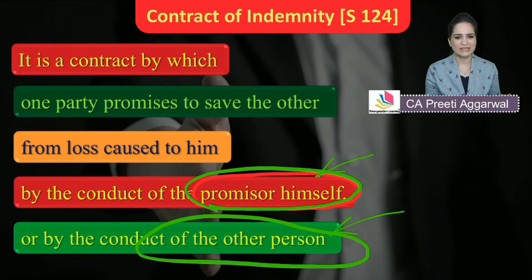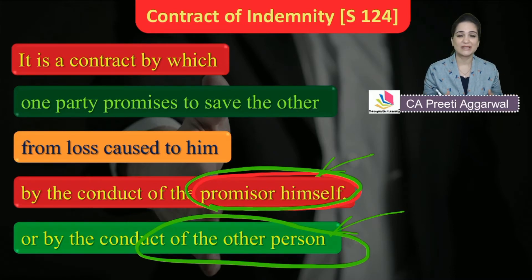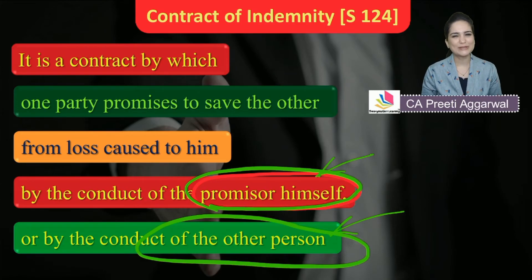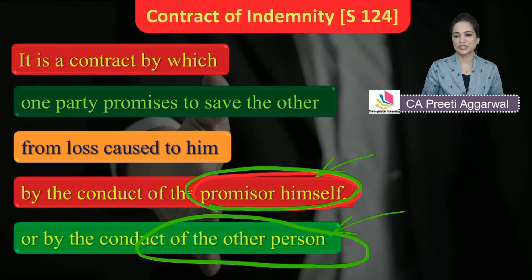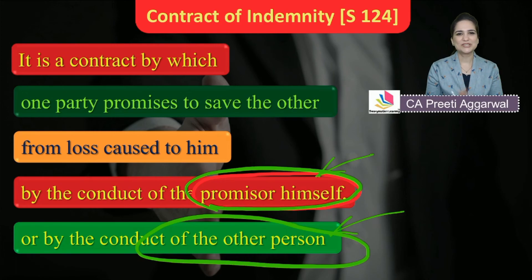It covers only those losses which are caused by the conduct of a person. Loss by natural calamities, accidents are not covered by the definition. But the courts are of the opinion that by applying equitable principles of good faith, justice, and equality, contracts of insurance are also contracts of indemnity. So if a question is asked in the exam, you will say yes — not by the definition, but by applying equitable principles.